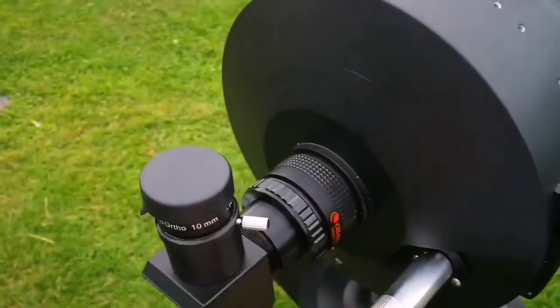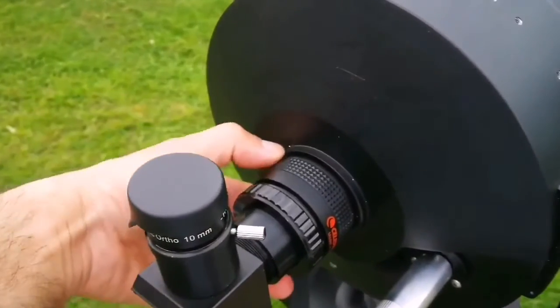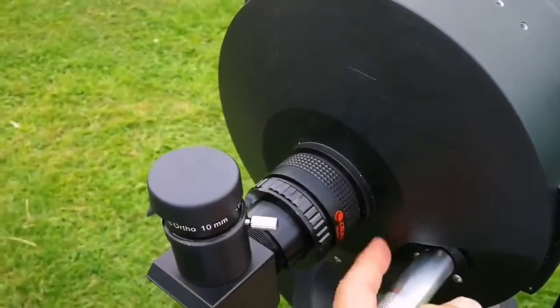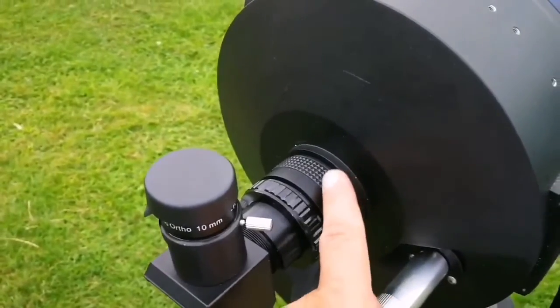And for other things, for very wide objects like the faint fuzzies, nebulae, clusters and all these things, it's better to have the focal reducer.